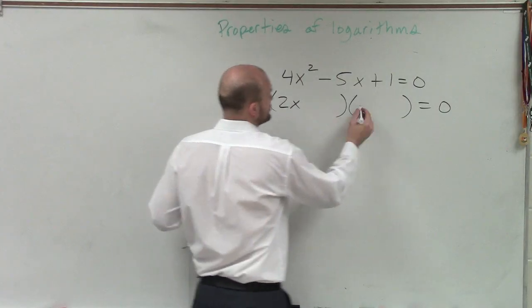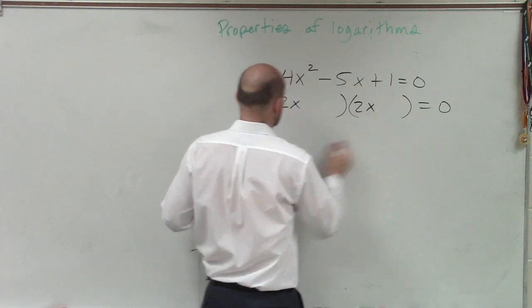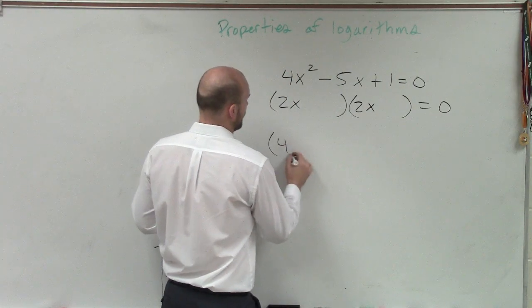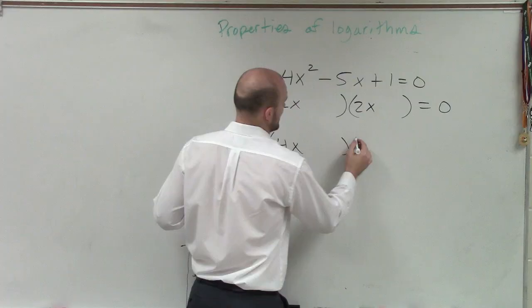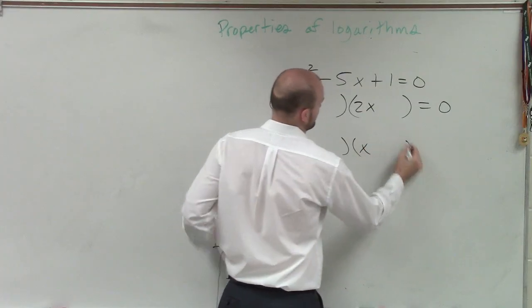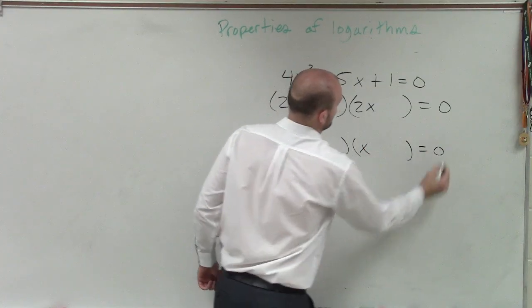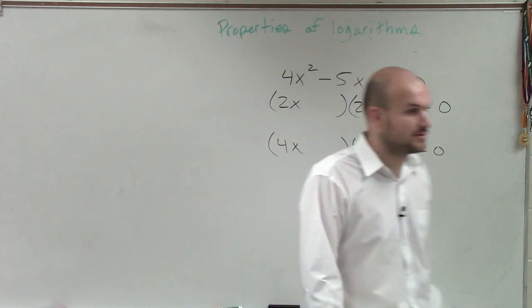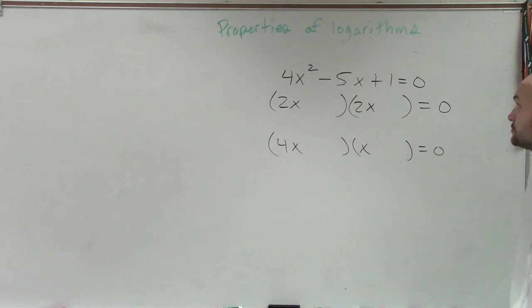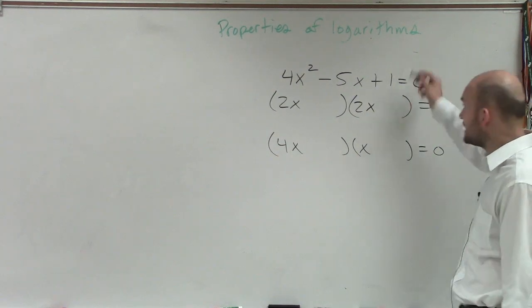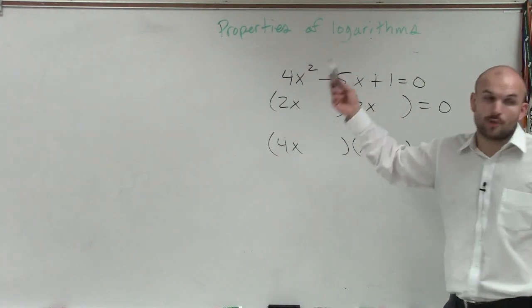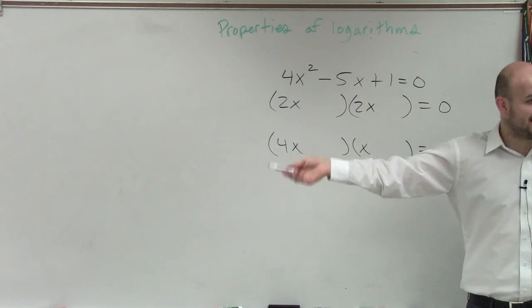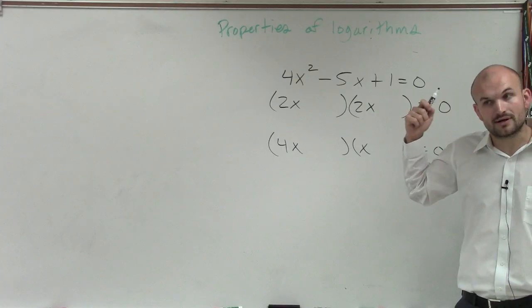So there are only two possibilities. You could do 2x times 2x, and you could do 4x times x — those are your only possibilities for the first two terms. Now, the only two possibilities for the last two terms are positive 1 and positive 1, or negative 1 and negative 1.